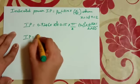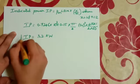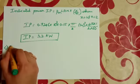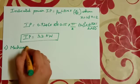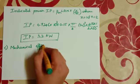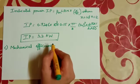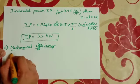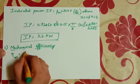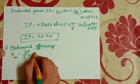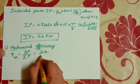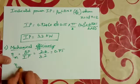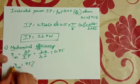Mechanical efficiency is given by BP by IP, that is 2.4 by 3.2, that is equal to 0.75. Mechanical efficiency is equal to 75%.